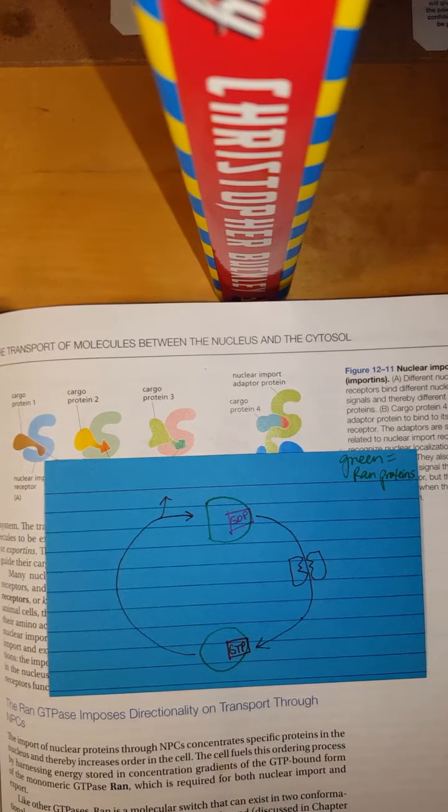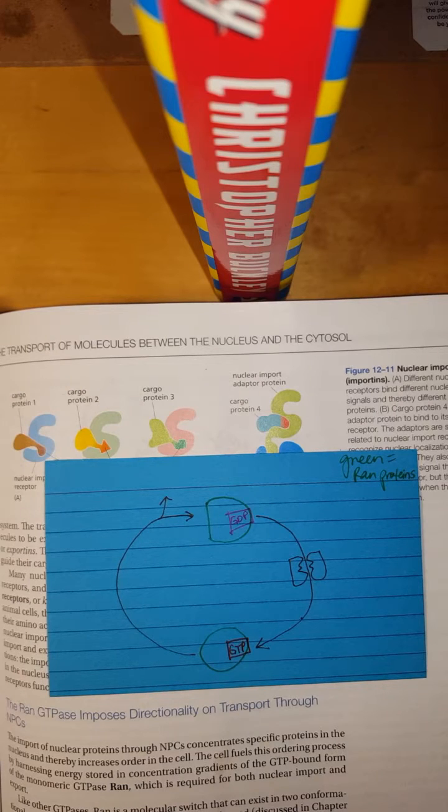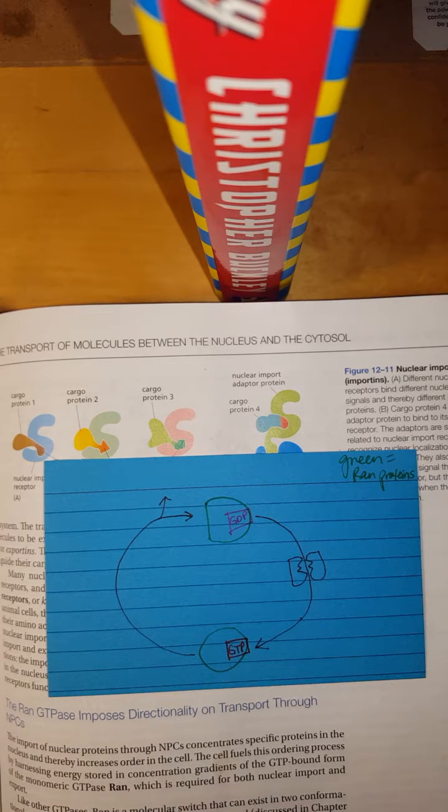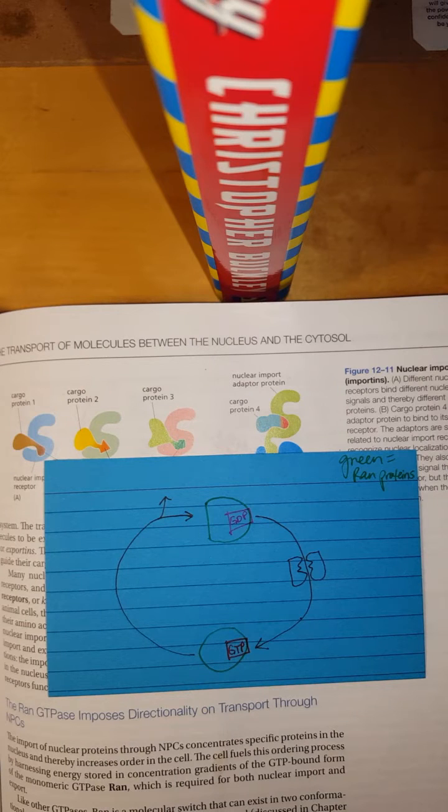So basically what I'm going to talk about is RAN, a RAS superfamily protein. There's a whole bunch of them in the RAS superfamily and they all start with R and are three letters long. It's a monomeric GTPase, meaning that by virtue of being a GTPase, it cleaves GTP into GDP with a phosphate.